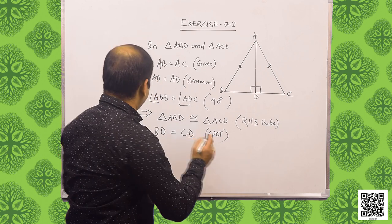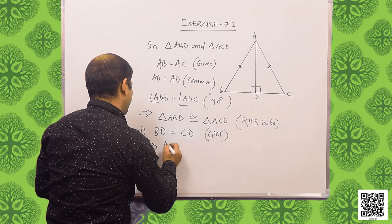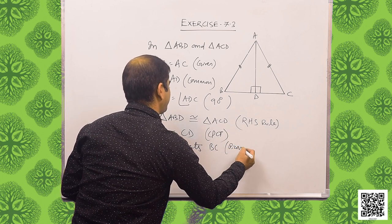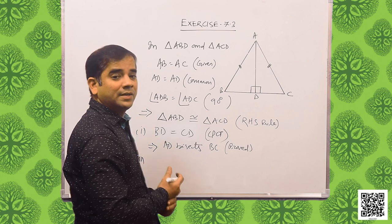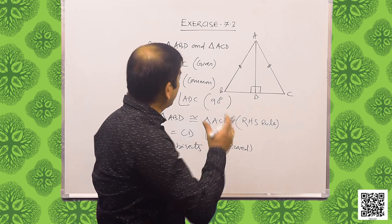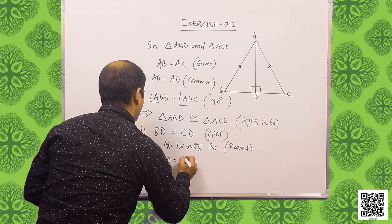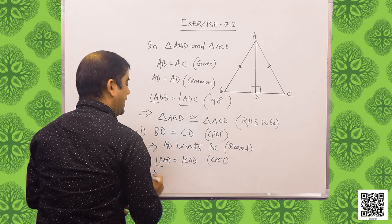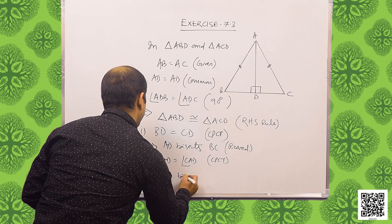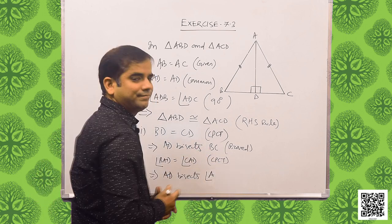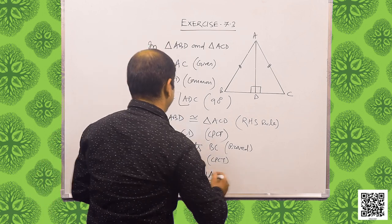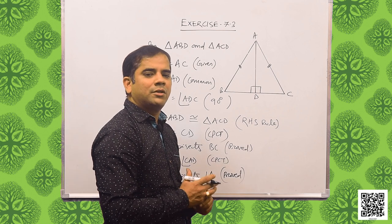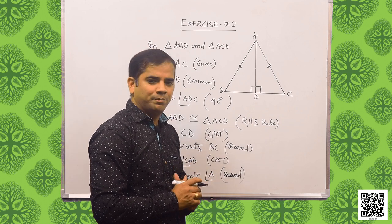That implies AD bisects BC — first part proved. Also, angle BAD is equal to angle CAD by CPCT, which implies AD bisects angle A. In this way we have proved both part one and part two of question number 2.